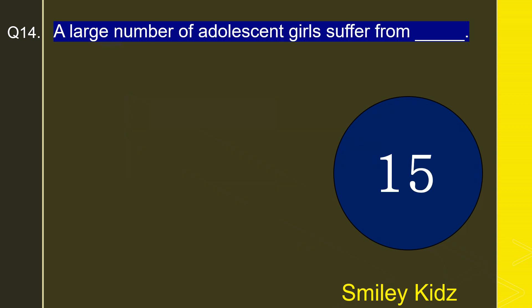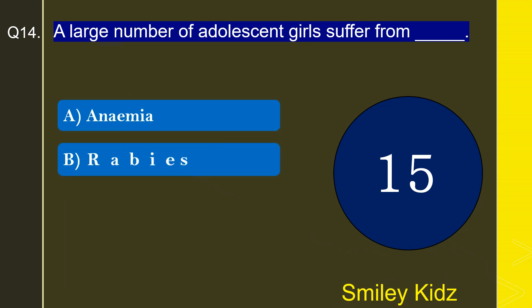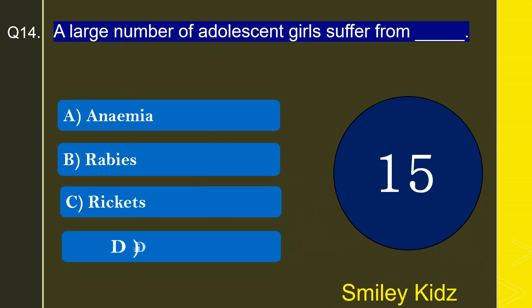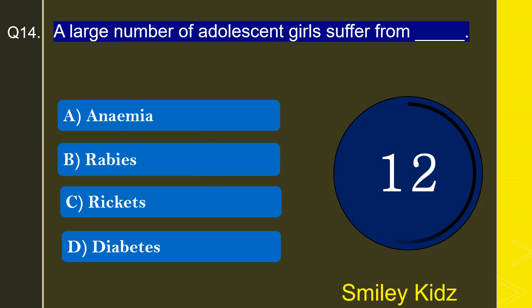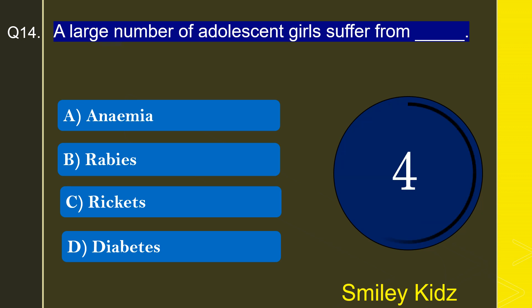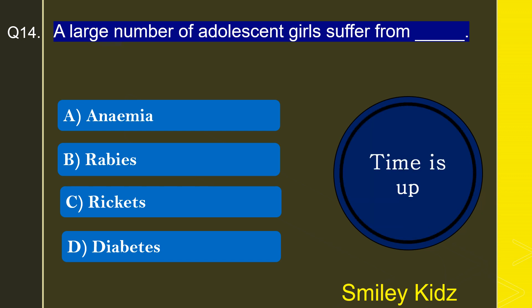Question number 14: A large number of adults and girls suffer from — Anemia, Rabies, Rickets, or Diabetes? The correct answer is Anemia. A large number of adolescent girls suffer from Anemia.